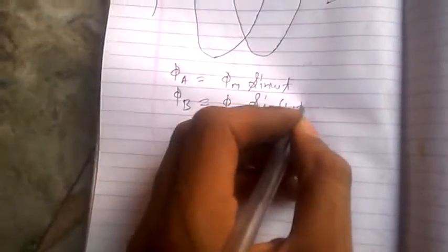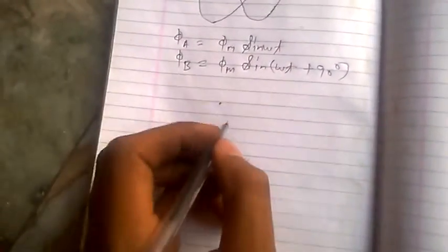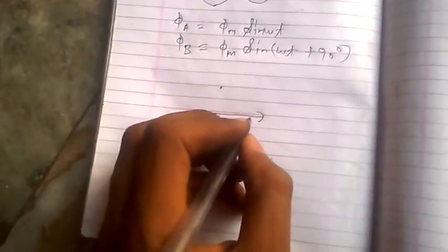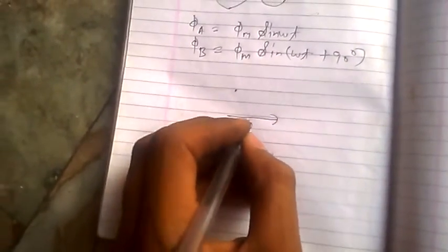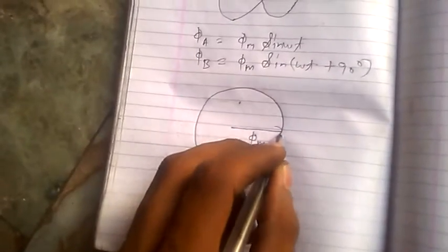Due to this, both windings' fluxes create a resultant flux phi m rotating in space. That is called the rotating magnetic field.